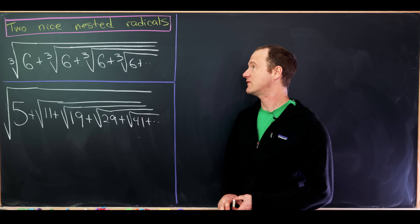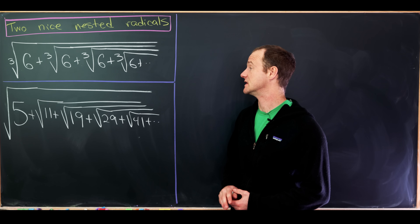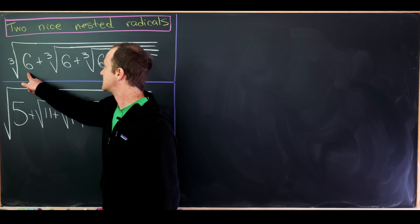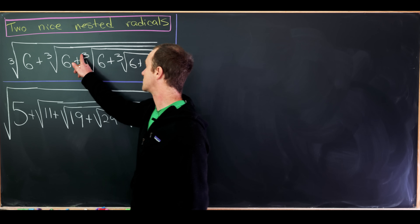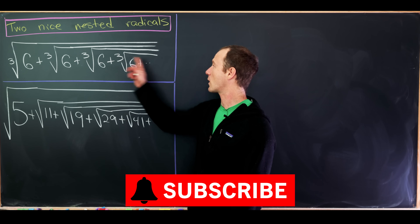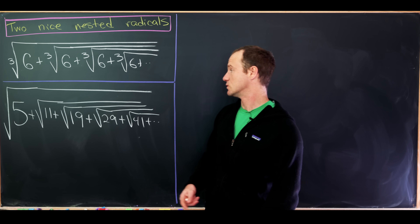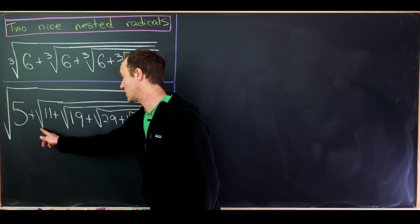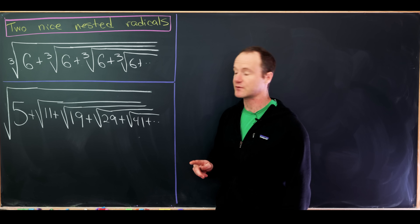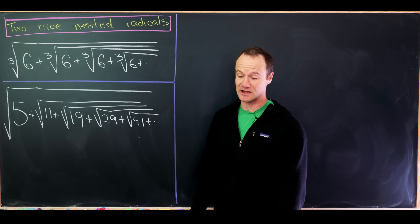Today I want to look at two nice infinitely nested radicals that turn out to be very simple numbers in the end. First we'll look at the cube root of 6 plus the cube root of 6 plus the cube root of 6, forever nested within one another. Then we'll look at the square root of 5 plus the square root of 11 plus the square root of 19 plus the square root of 29 plus the square root of 41, again all nested in one another.